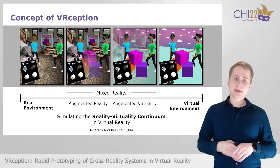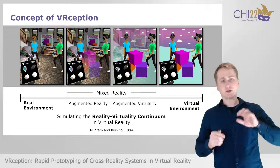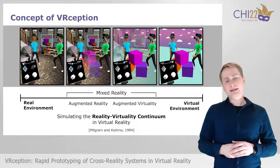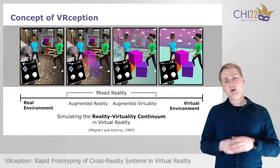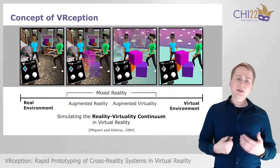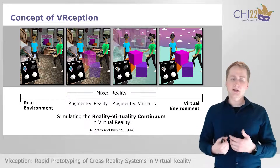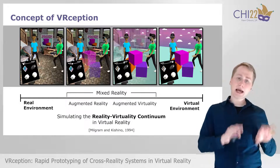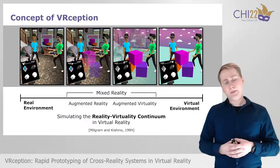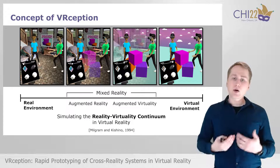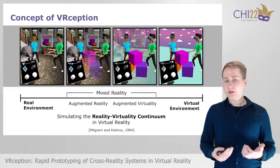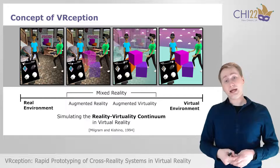The idea is to simulate different realities and transition between these realities completely inside of virtual reality. In other words, we suggest simulating the entire reality-virtuality continuum in virtual reality, thereby allowing users to quickly and collaboratively prototype cross-reality systems.